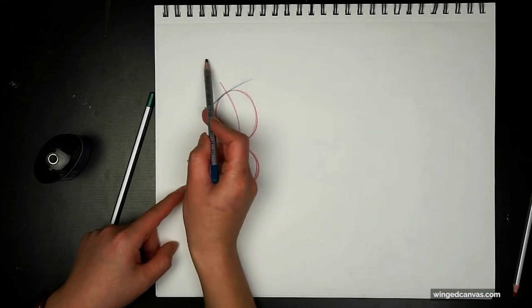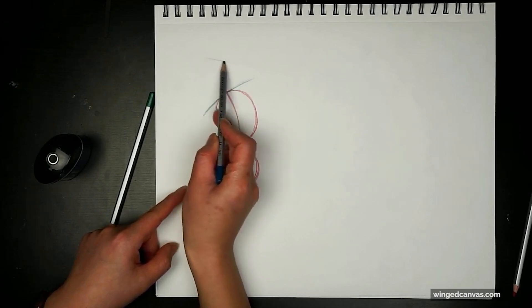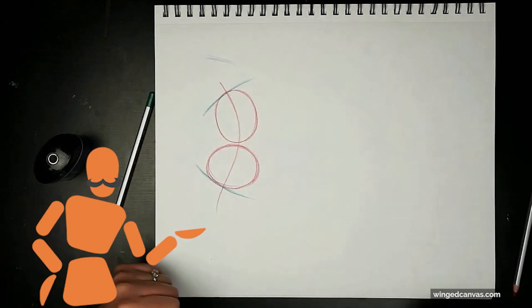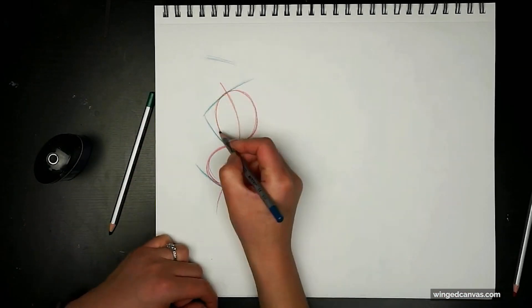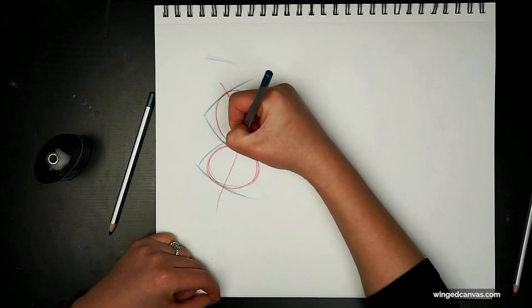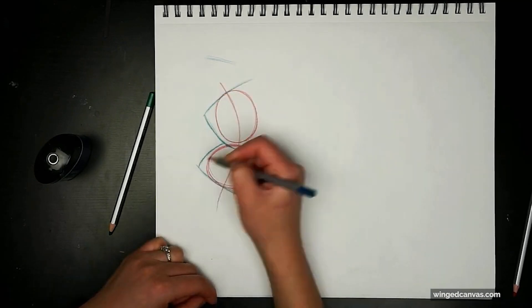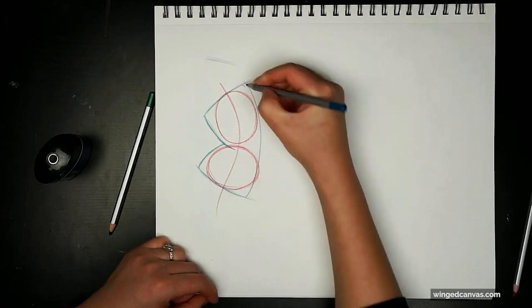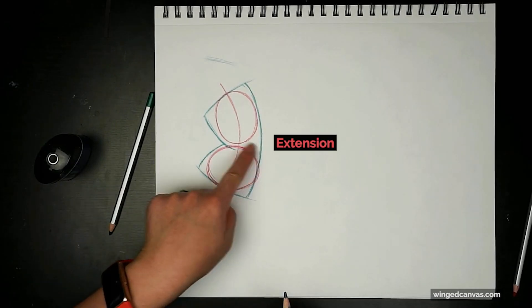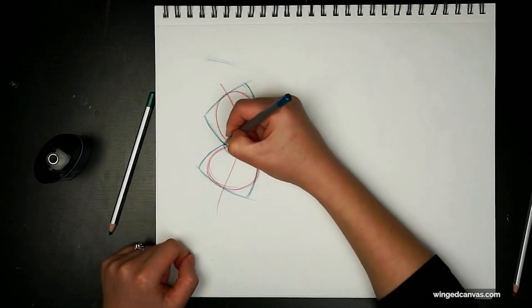So now what we're going to do is we're going to draw the compression. Pretend this is a pillow, and then on this side it's going to be an extension. Extension, compression. You can draw a second line if you want.